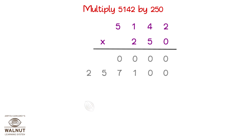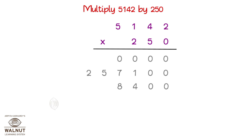We write two zeros — 1 in the units place and 1 in the tens place. Now let's multiply with 2. Two twos are 4. Two fours are 8. Two ones are 2. And two fives are 10.